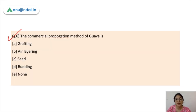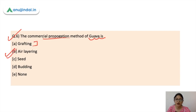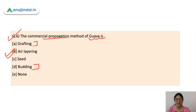Question number six: the commercial propagation method of guava is what? The options are grafting, air layering, seed, and budding. The correct answer is air layering. In grafting and budding, you connect two plants. With seed, there is germination and growth from soil.